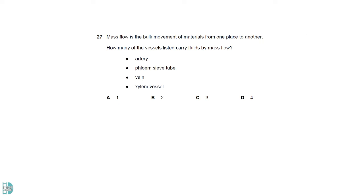Bulk movement of materials occurs in all four of the vessels. Arteries and veins have the mass flow of a lot of substances due to the blood flow. The phloem sieve tube and xylem vessels have the mass flow of phloem sap and xylem sap.